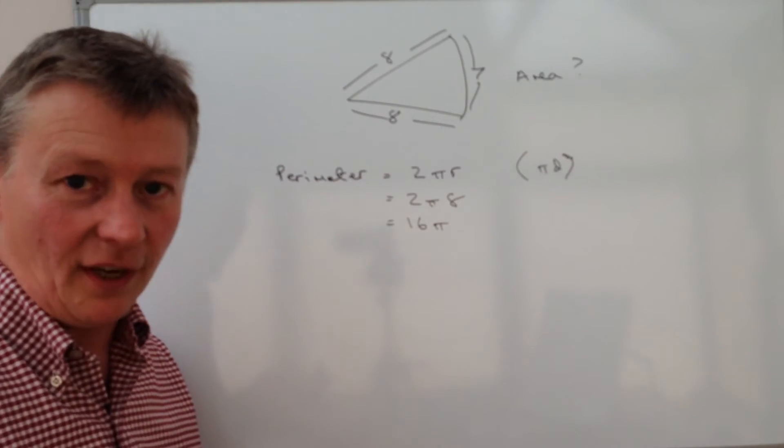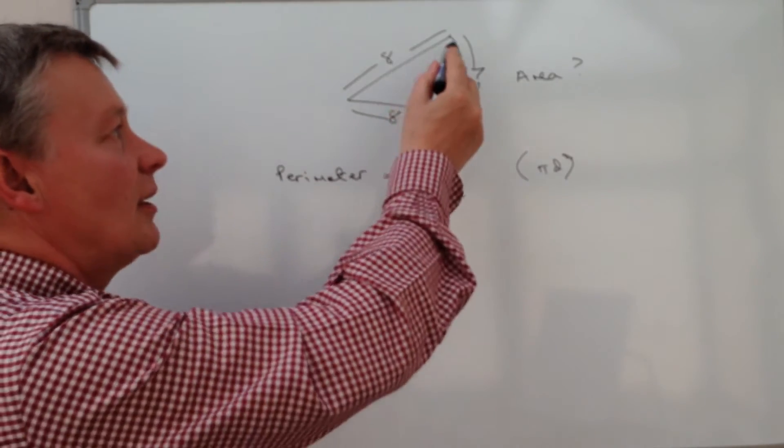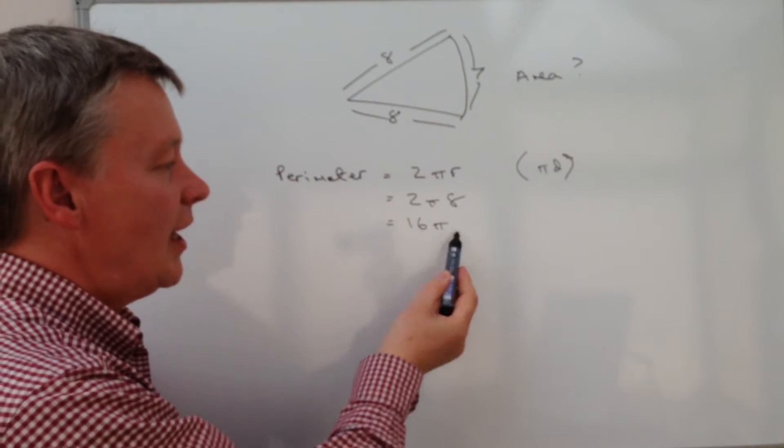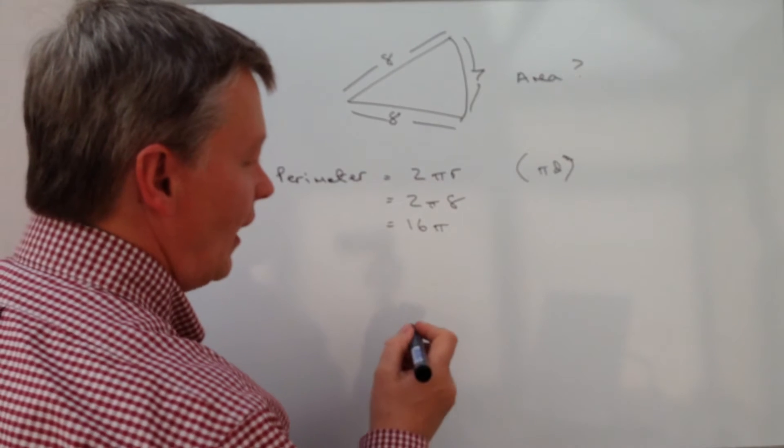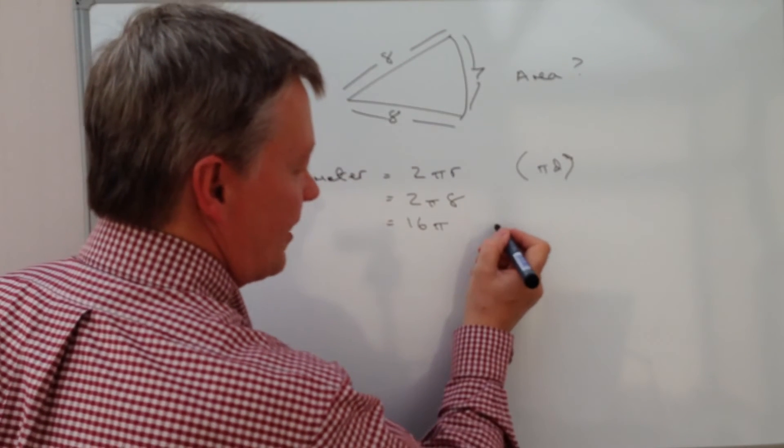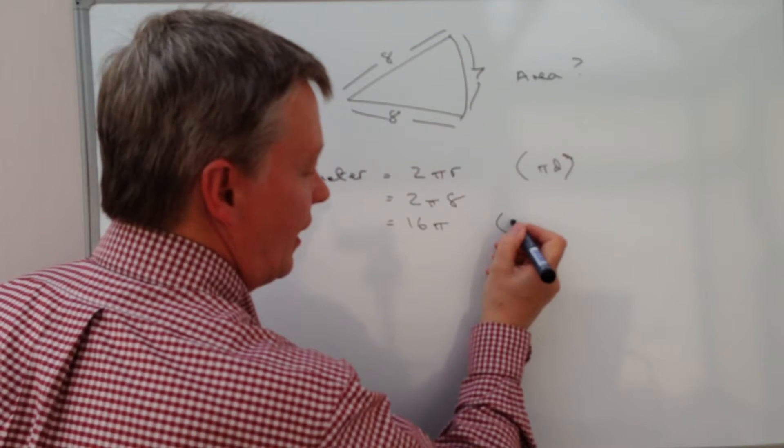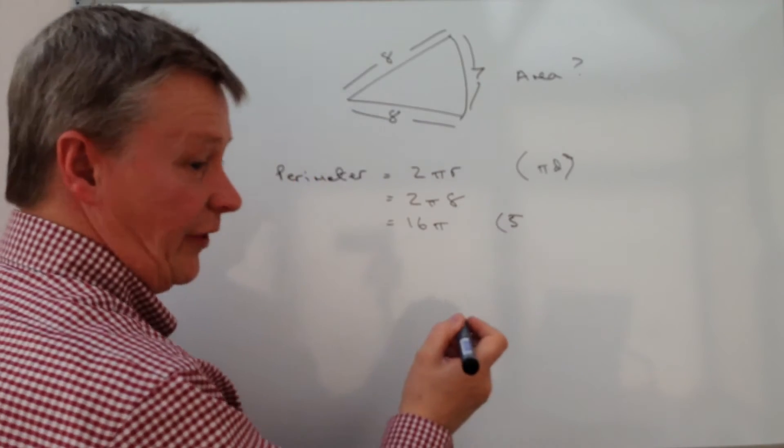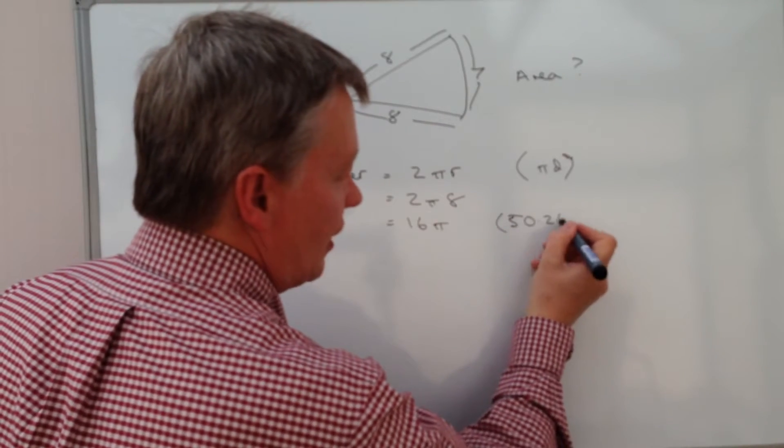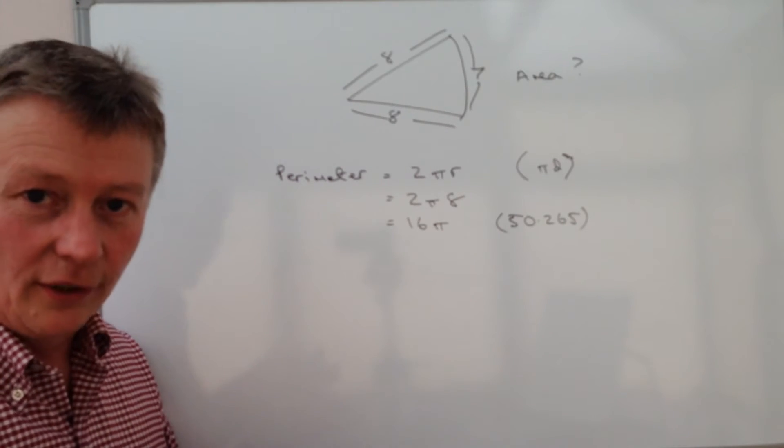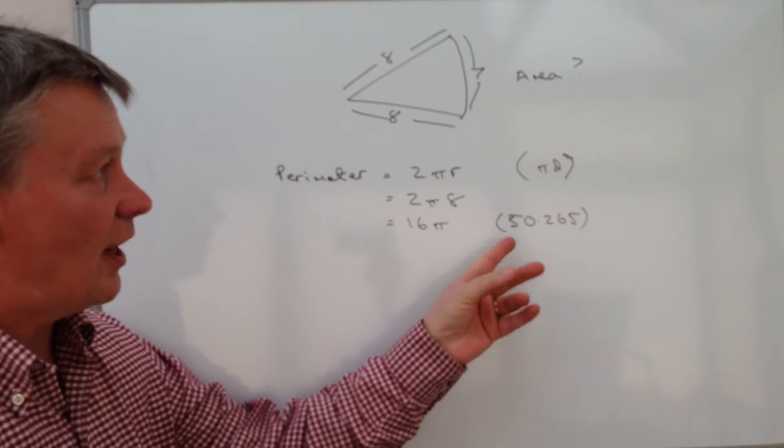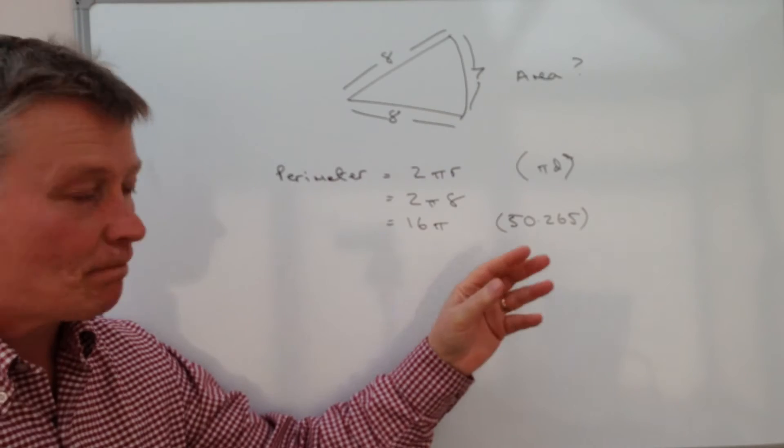So the overall perimeter of this particular circle, if we had the whole circle, would be equivalent to 16π. If you want to make that the decimal equivalent, it's going to be I think 50.265. So the whole circle overall perimeter is about fifty centimeters.